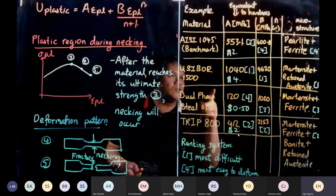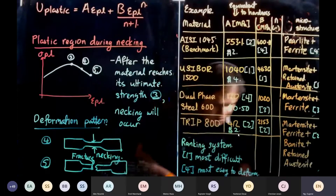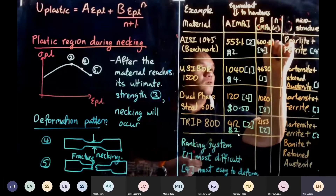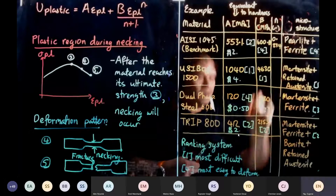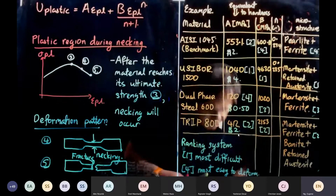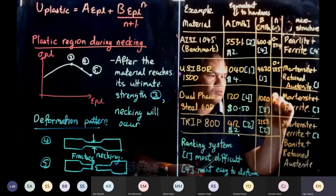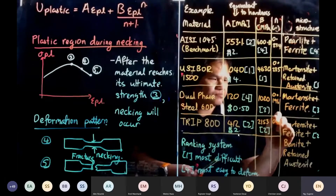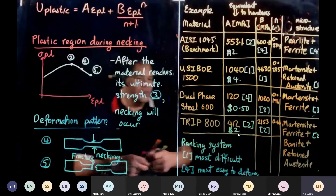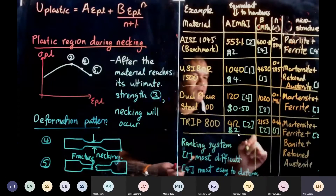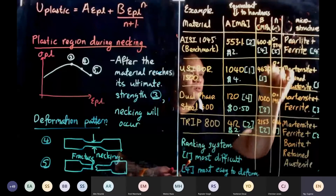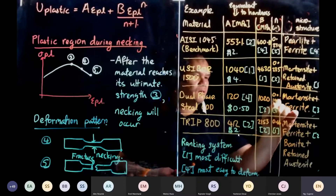Now we look at the strain hardening coefficient n. By looking at the index: 0.234, 0.235 — not a lot of difference — 0.196, and 0.66. Based on the n index, the ranking changes again: this becomes number one, these two are pretty close at number two, and this one is number four.